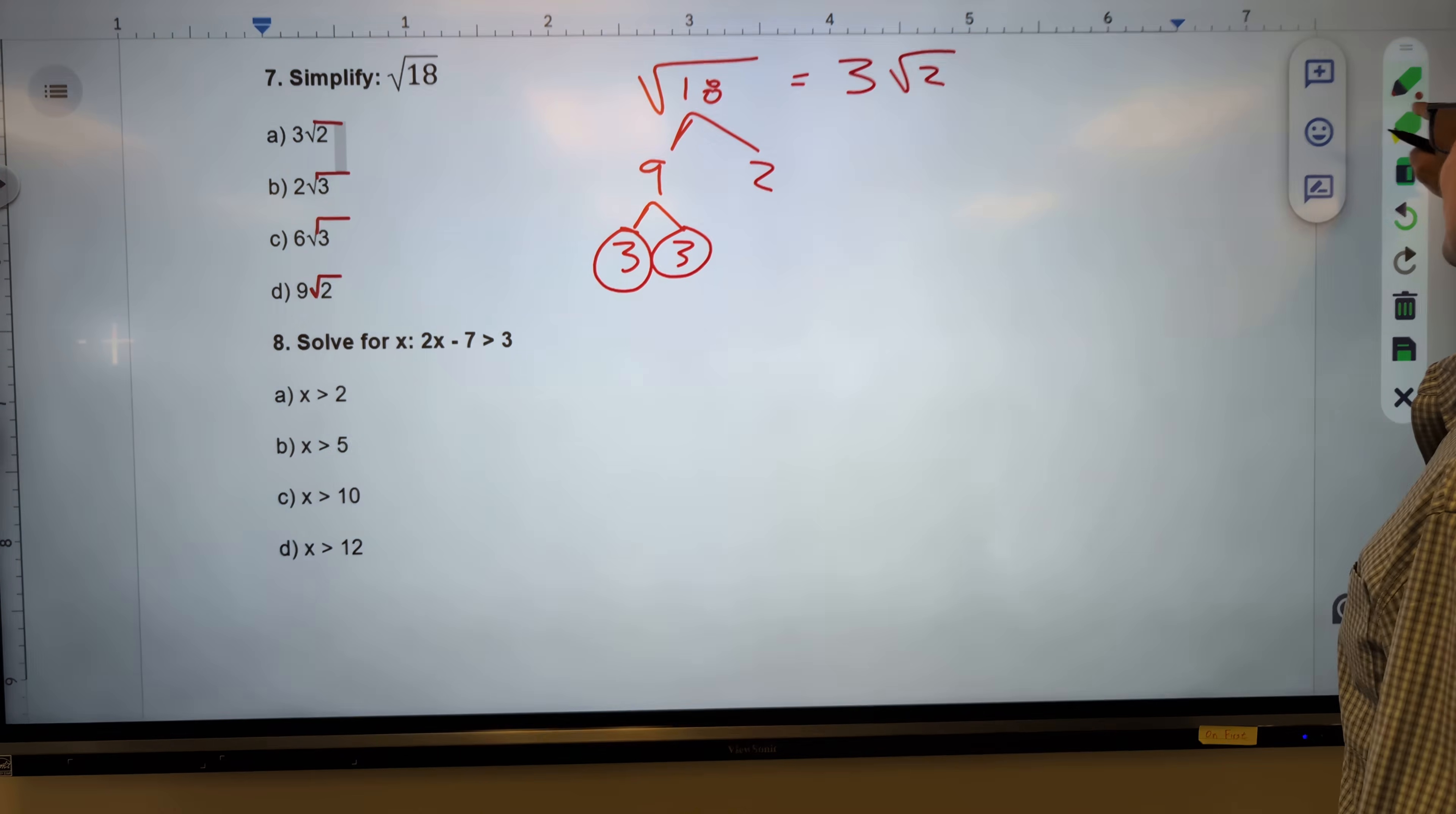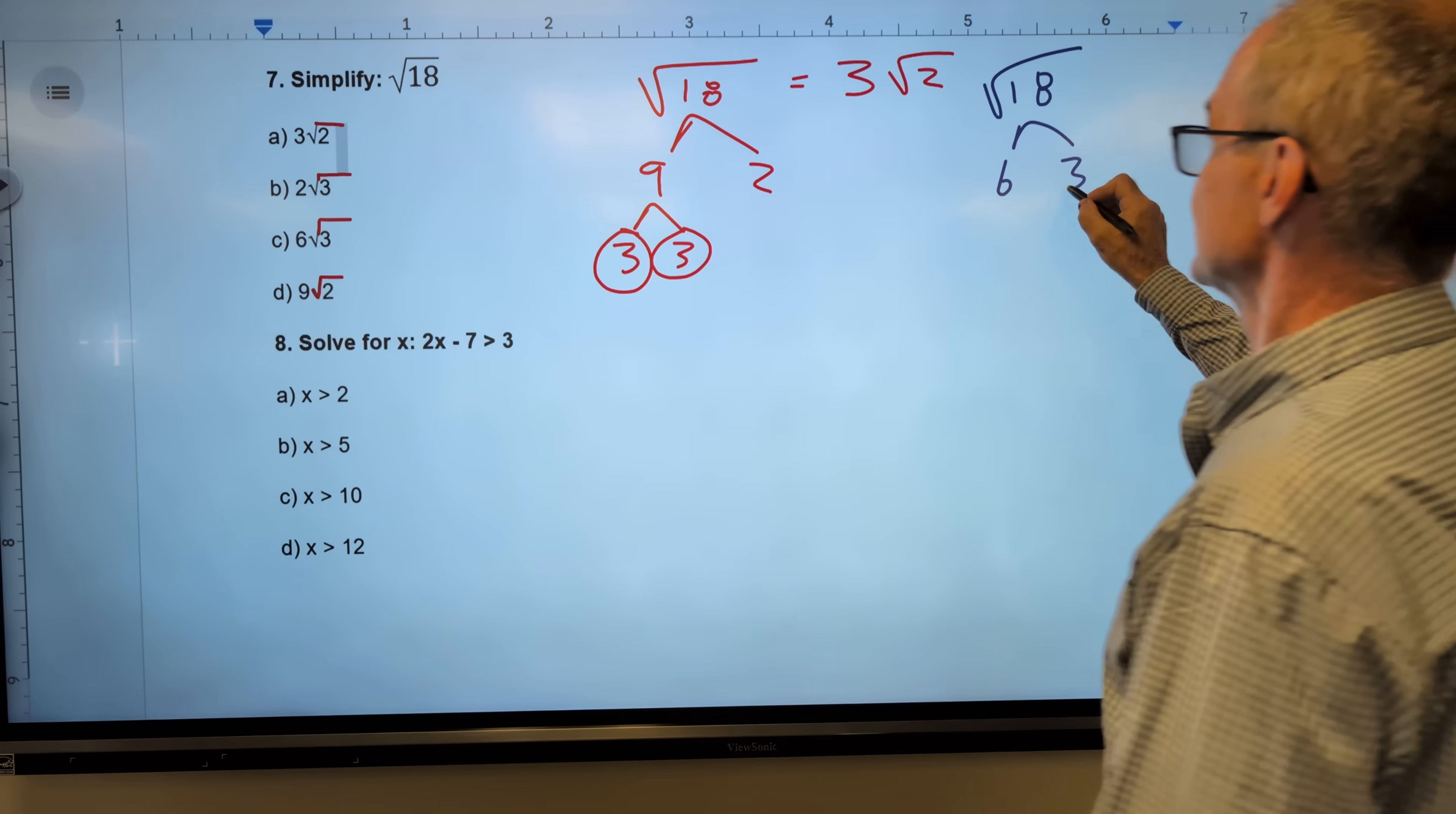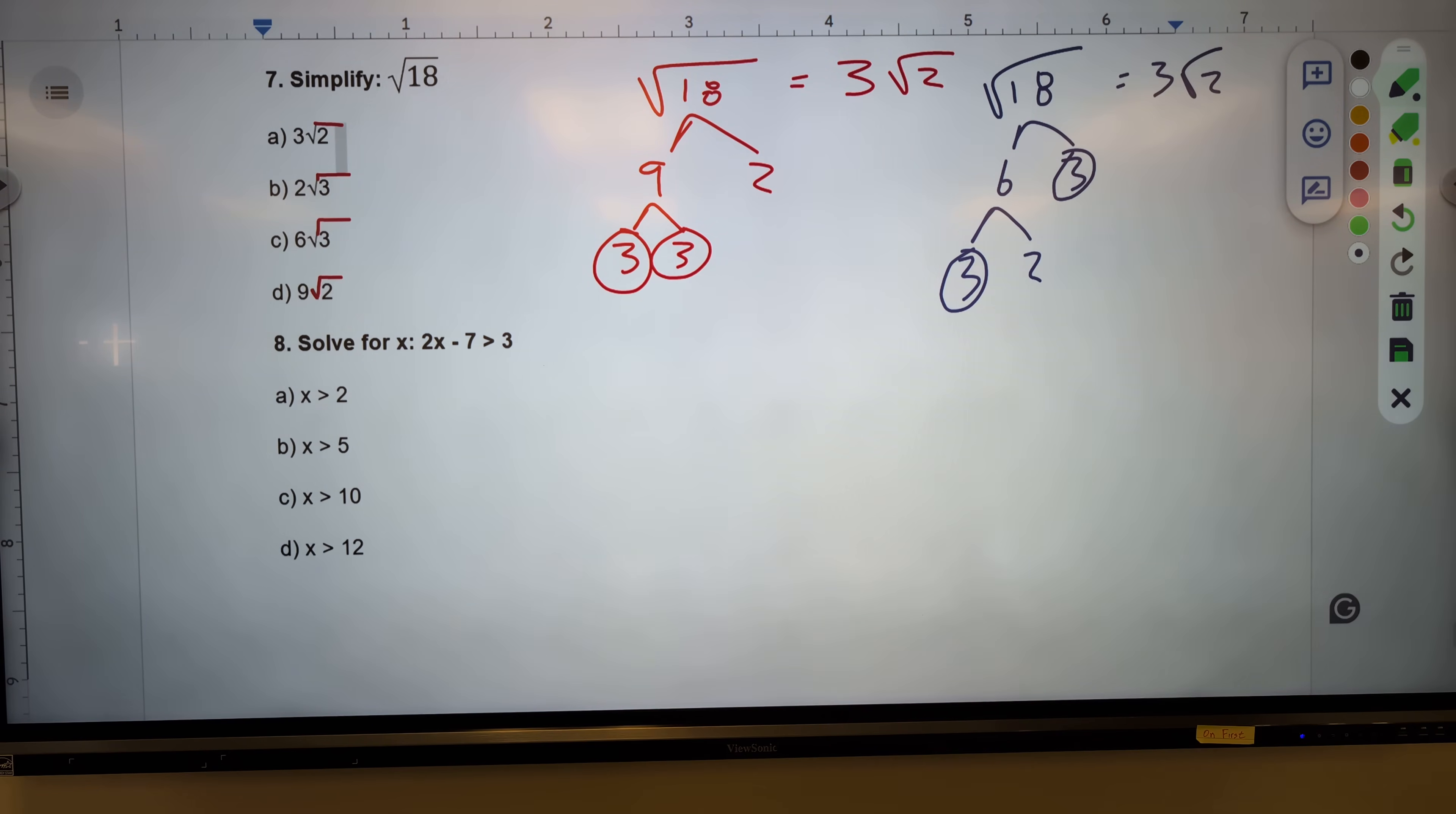Let me do that one again a different way. Let's say you saw root 18 as a 6 and a 3. Well, a 6 is made up of a 3 and a 2. Every pair, one comes out. No pair for the 2. It stays in. It gives me the exact same answer.